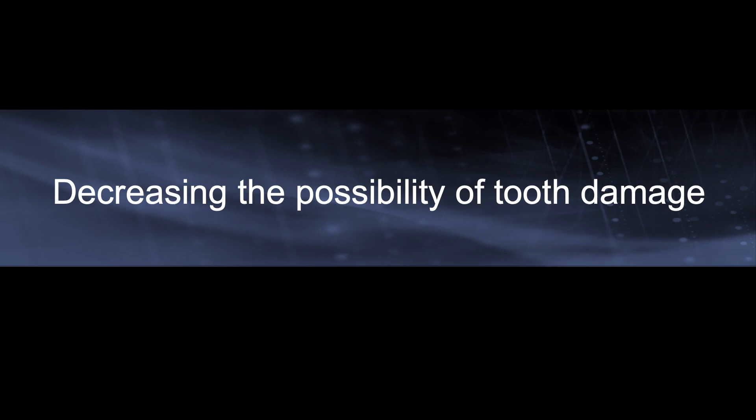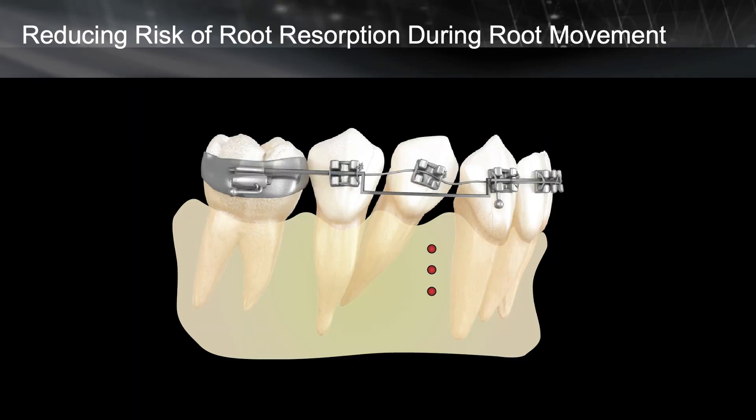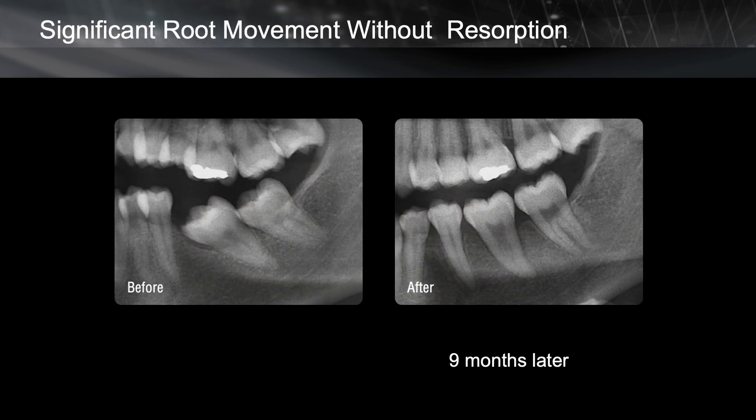The third category is that we should use MOPs to decrease the risk of damage to the tooth structure. In some movements, for example root movement, the root needs to move in a dense bone for a long distance. The main factor of root resorption is bone density. That's the reason the rate of root resorption, especially in adults, is more than in children, because children don't have dense bone. In this condition, if you are applying MOPs in the direction of the root movement, by increasing the rate of bone remodeling, you can decrease the possibility of root resorption.